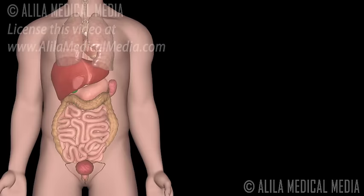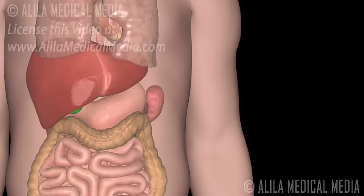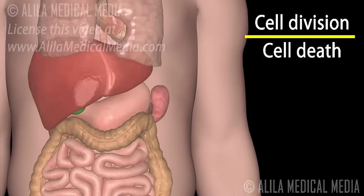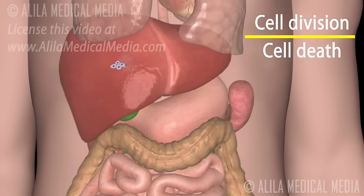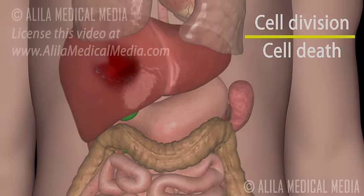The number of cells in a tissue is determined by the balance between cell division and cell death. Uncontrollable cell division leads to formation of abnormal growths called tumors. Tumors can be benign or malignant.